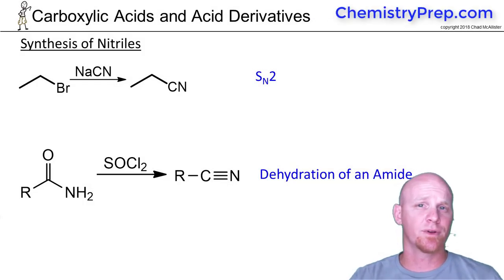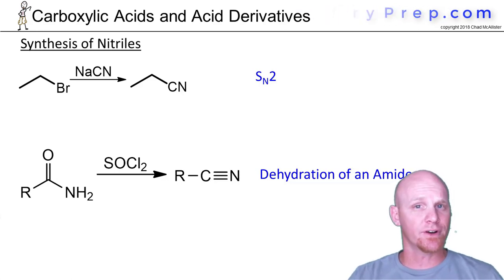Finally, we'll look at one last carboxylic acid derivative: the nitrile. It's rather unique with no carbonyl here, no carbon-oxygen bond, but a carbon-nitrogen triple bond instead. Still, it's technically considered a carboxylic acid derivative, and we can make them in two ways.